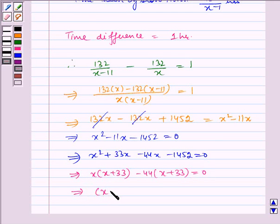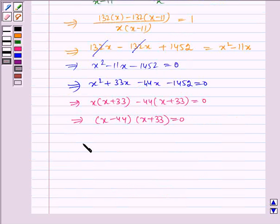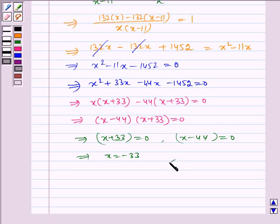So x minus 44 into x plus 33 is equal to 0, which implies x plus 33 is equal to 0 and x minus 44 is equal to 0, which implies x is equal to minus 33 and x is equal to 44.